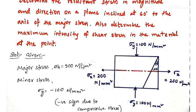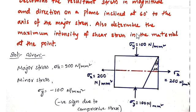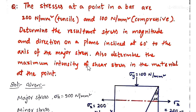The stresses at a point in a material are given in two mutually perpendicular directions. One is 200 N/mm² tensile, representing the major stress — we take sigma x as 200 N/mm² in the x direction. The other is 100 N/mm² compressive, taken in the y direction. The inclination of the oblique plane with the axis of the major stress is given, and we have to find out the resultant magnitude and direction on the inclined plane making 60 degrees to the axis of the major stress.